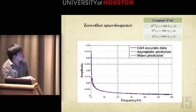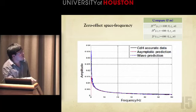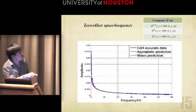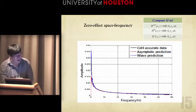Now let's look at the frequency. Here at the high end, this wave method and its corresponding asymptotic matches well with the Cagniard-de Hoop exact data. However, notice in the low end, there's a big difference.